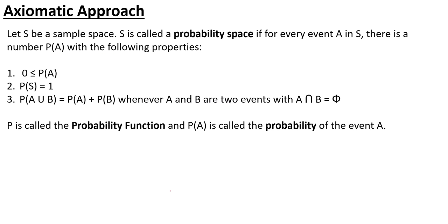Our third approach is the axiomatic approach. The axiomatic approach is based on a certain set of axioms, and it is more grounded in the logical structure of probability theory. But it is mainly a theoretical framework — when you actually solve probability questions, you use the classical approach. The axiomatic approach is used when you need to develop probability theories.